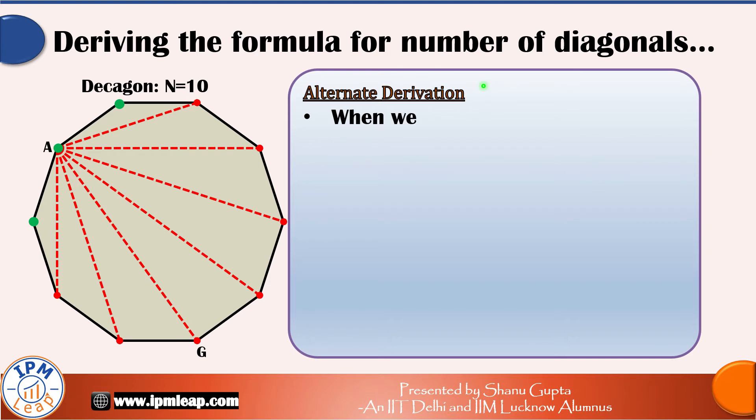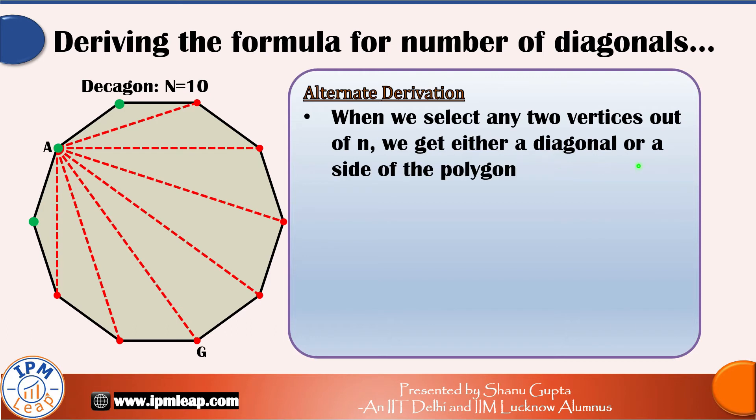It goes like this. Whenever we select any two vertices out of n, we get either a diagonal or a side of the polygon, isn't it? So number of diagonals is simply equal to the number of ways of selecting two vertices out of n minus the number of sides.